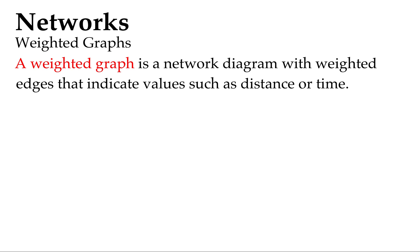A weighted graph is a network diagram with weighted edges that indicate values such as distance or time. Here's an example - you've got a bunch of towns, A through E, in different arrangements, and they've got numbers on their edges. These are weighted edges, making up a weighted graph.